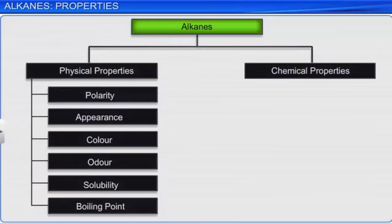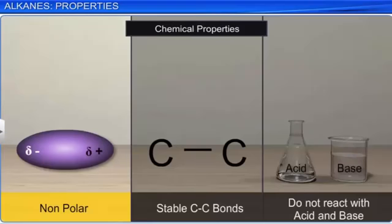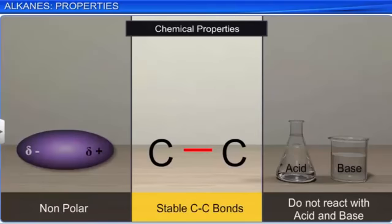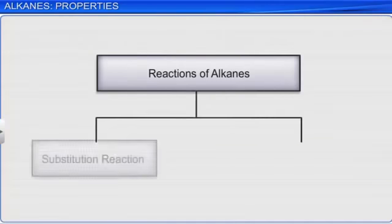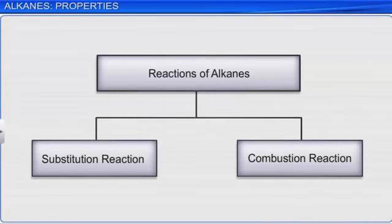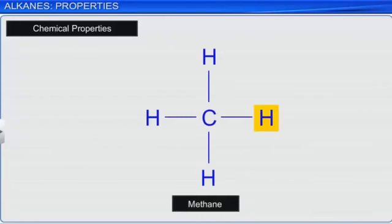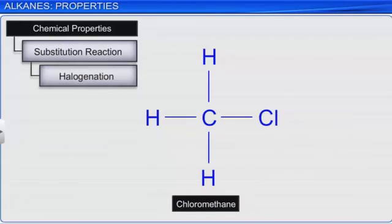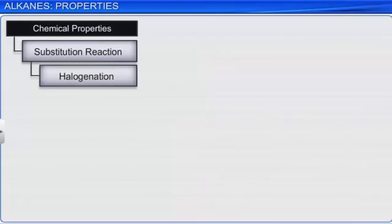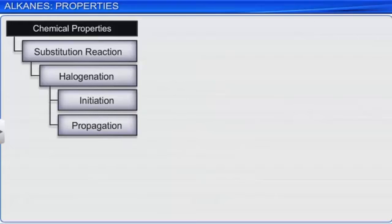Now let's look at the chemical properties of alkanes. Alkanes are non-polar, their carbon bonds are quite stable, and so they do not easily react with acids and bases. However, they do undergo substitution reactions and combustion reactions under certain conditions, as their carbon atoms are in strongly reduced states. During substitution reactions, the hydrogen atom of an alkane is substituted. When the element substituting the hydrogen is a halogen, the reaction is called halogenation. It involves three steps: initiation, propagation, and termination.